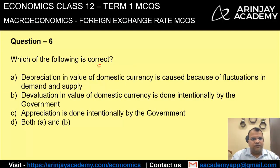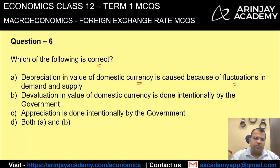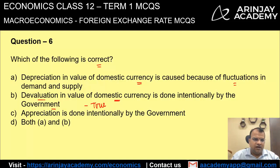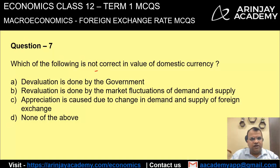Which of the following is correct? Depreciation of value in domestic currency is caused by fluctuations in demand and supply — definitely, depending on demand and supply of currency, there is depreciation or appreciation. Devaluation in value of domestic currency is done intentionally by the government — this is also true. The process of devaluation cannot be done through market forces of demand and supply; devaluation is done by the government. Therefore, the correct answer is both A and B.